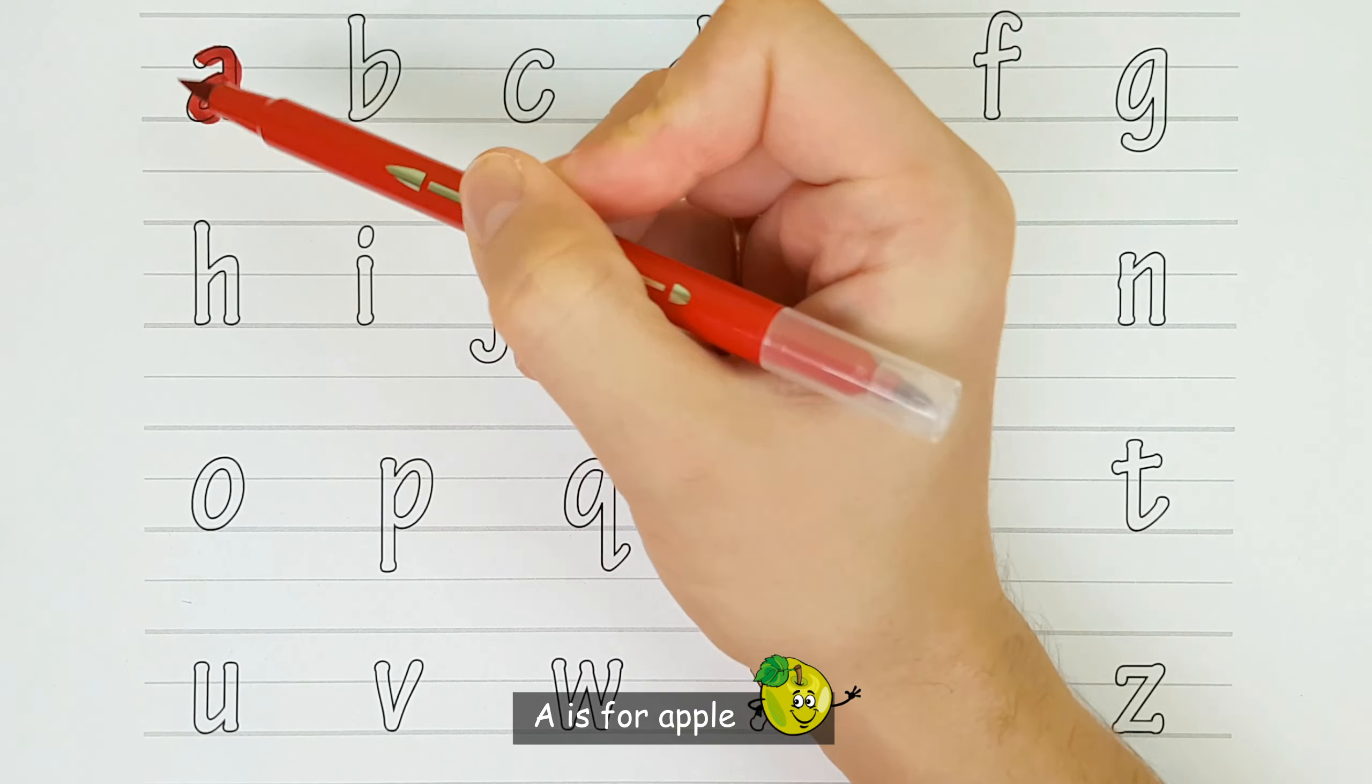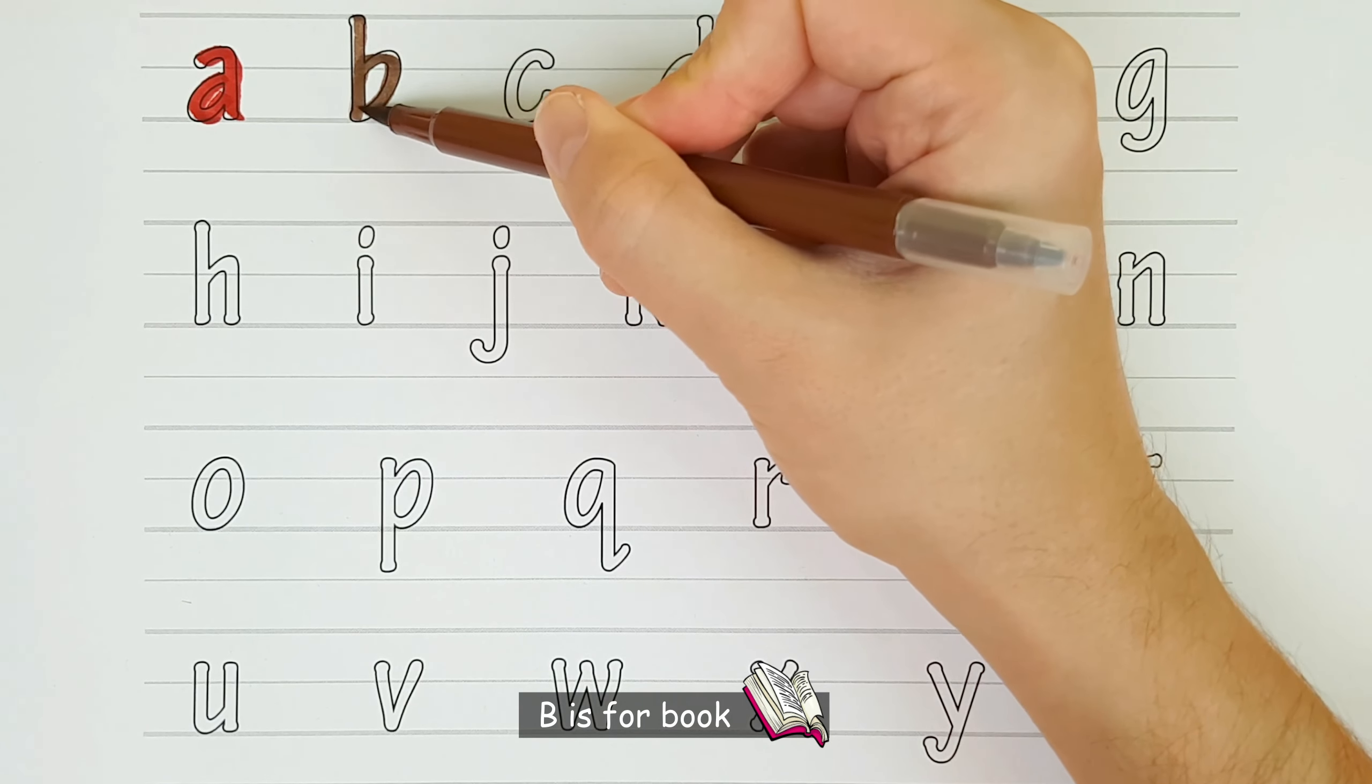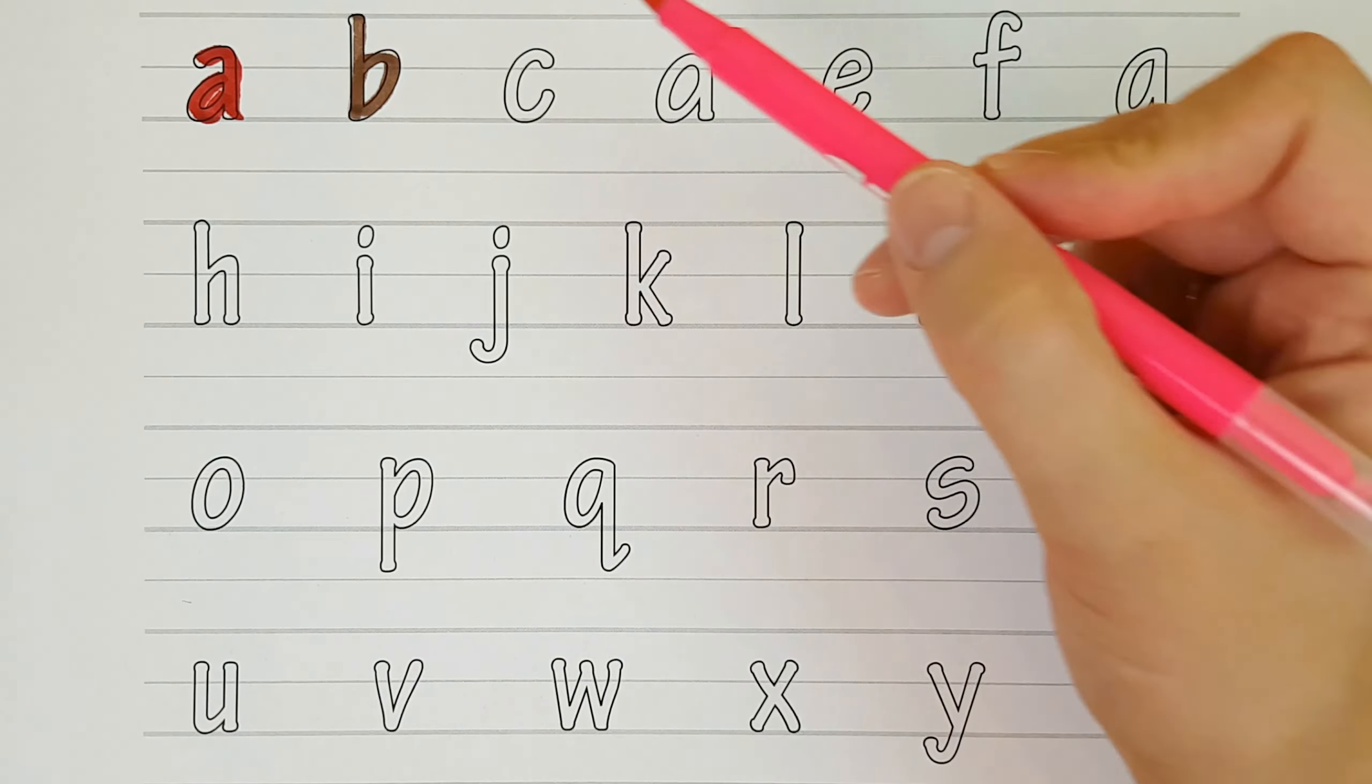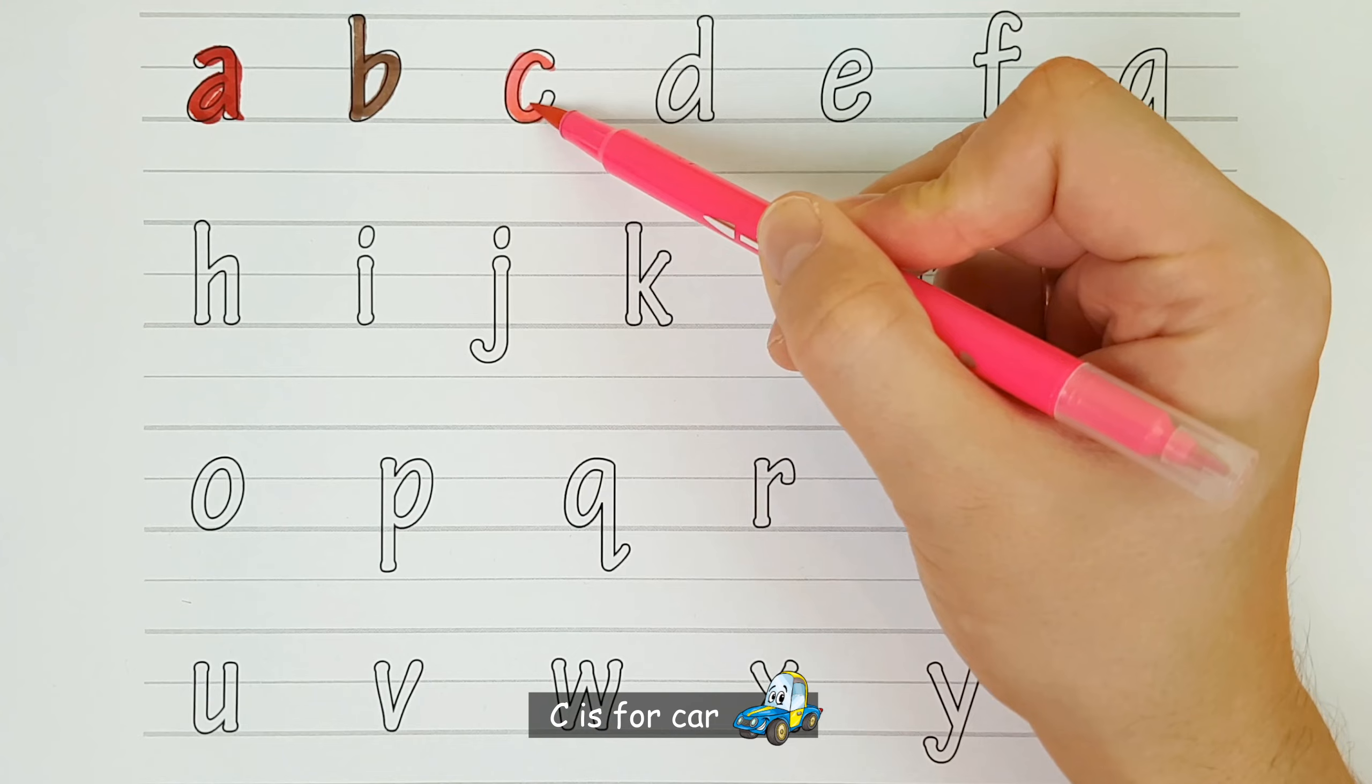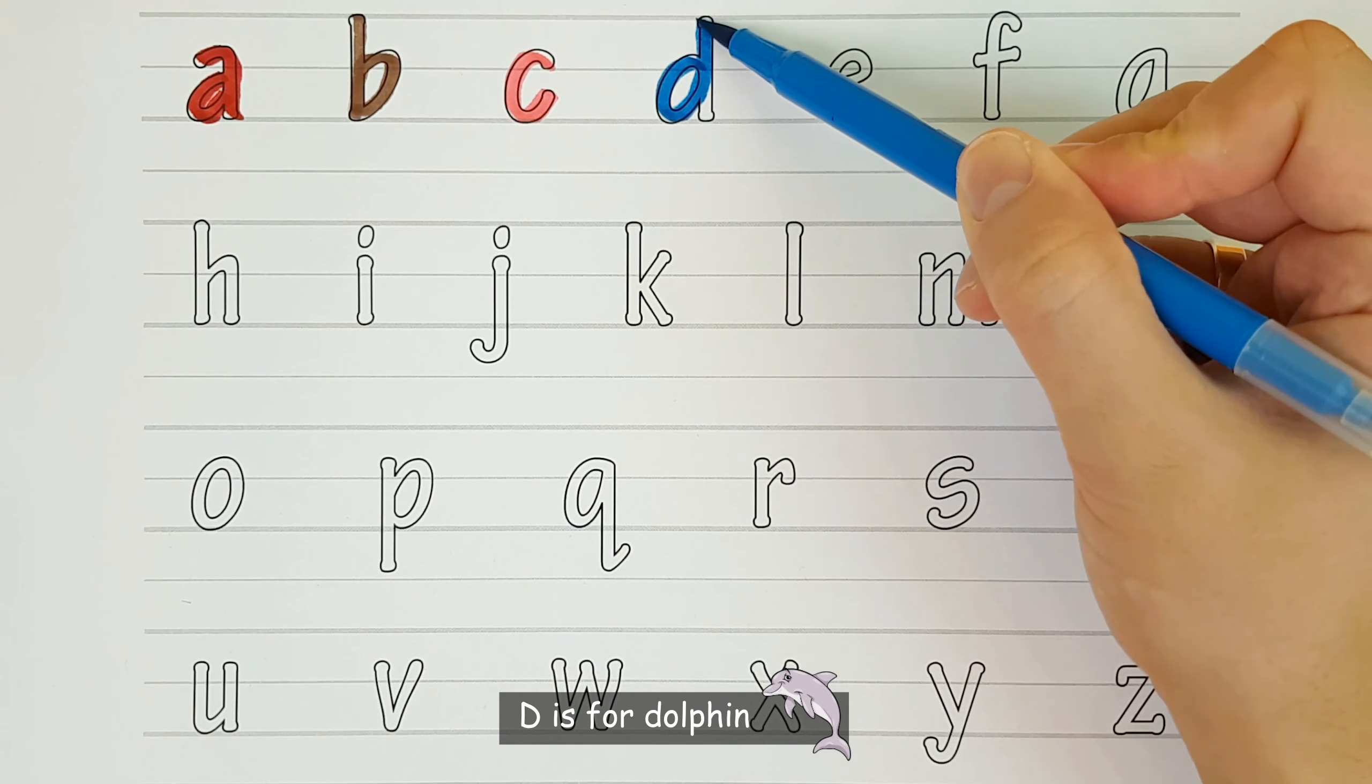A. A is for Apple. B. B is for Book. C. C is for Car. D. D is for Dolphin.